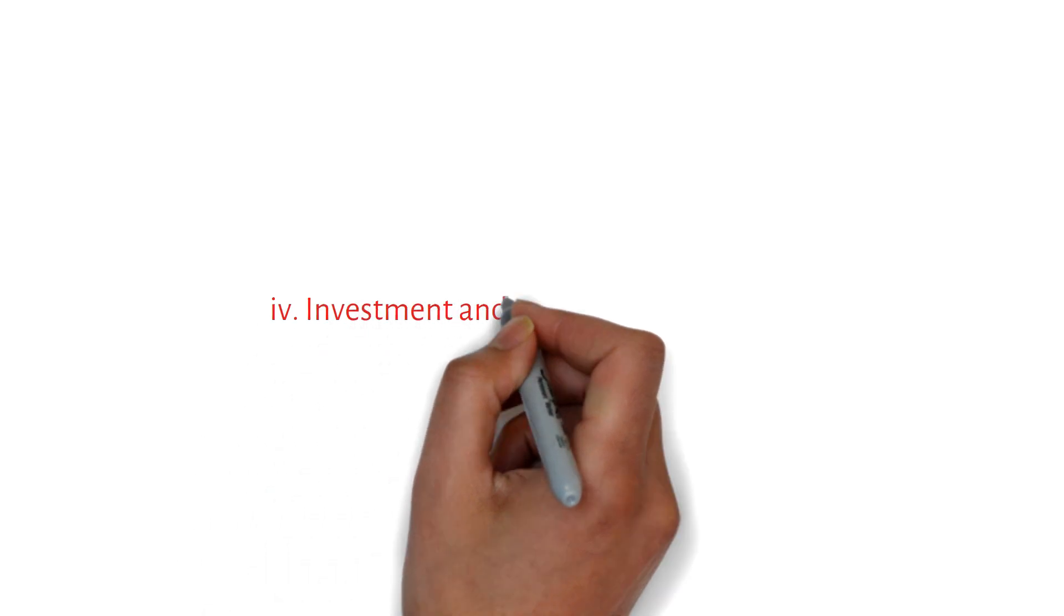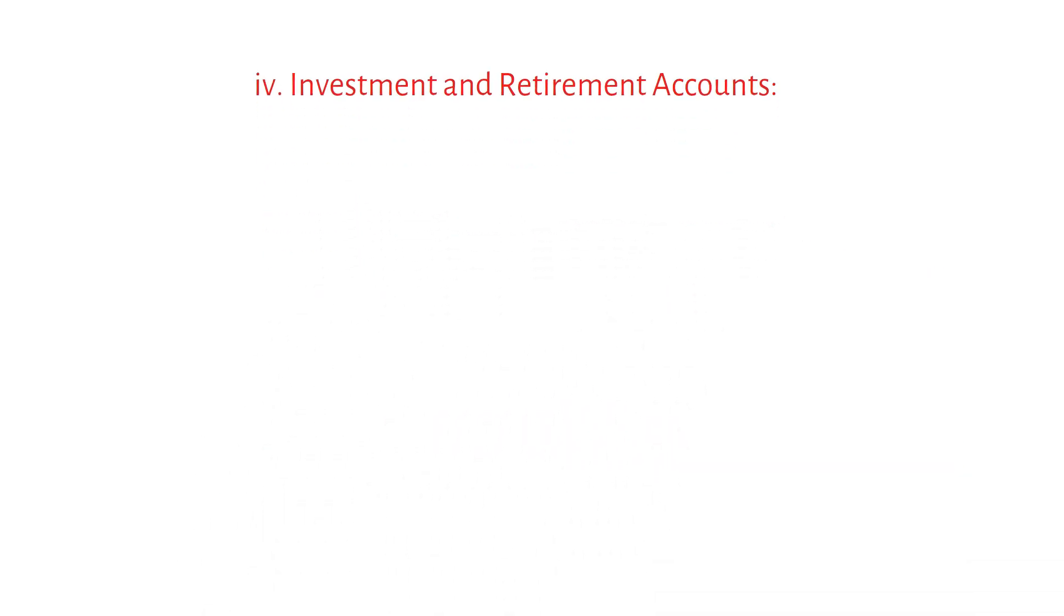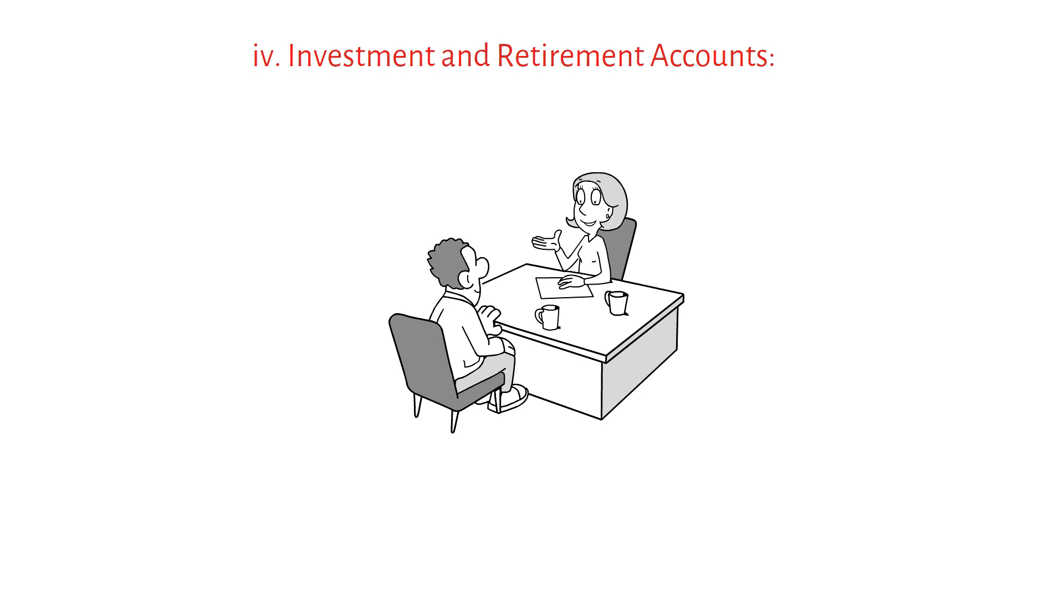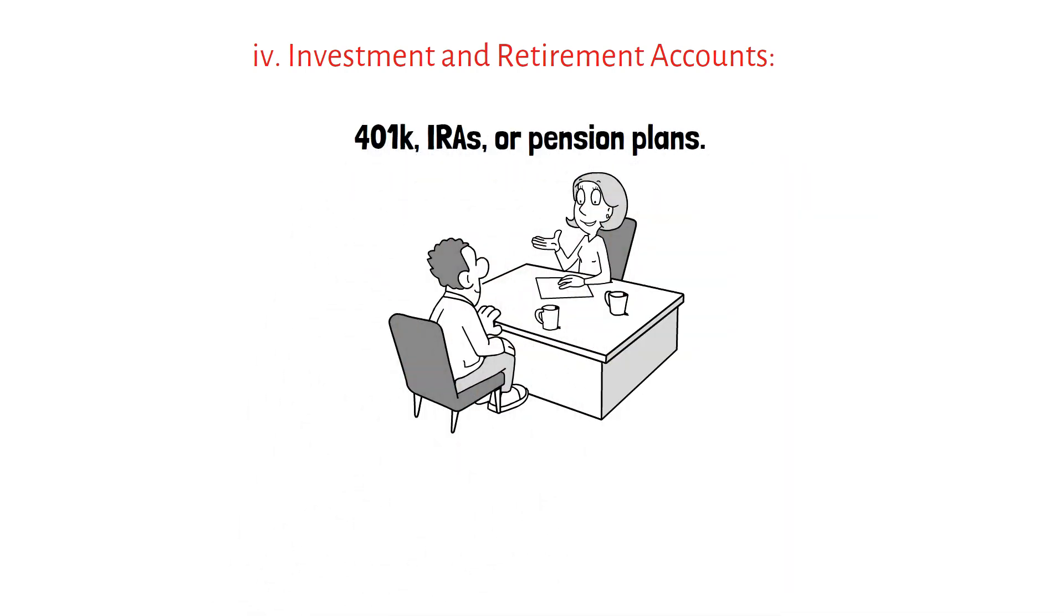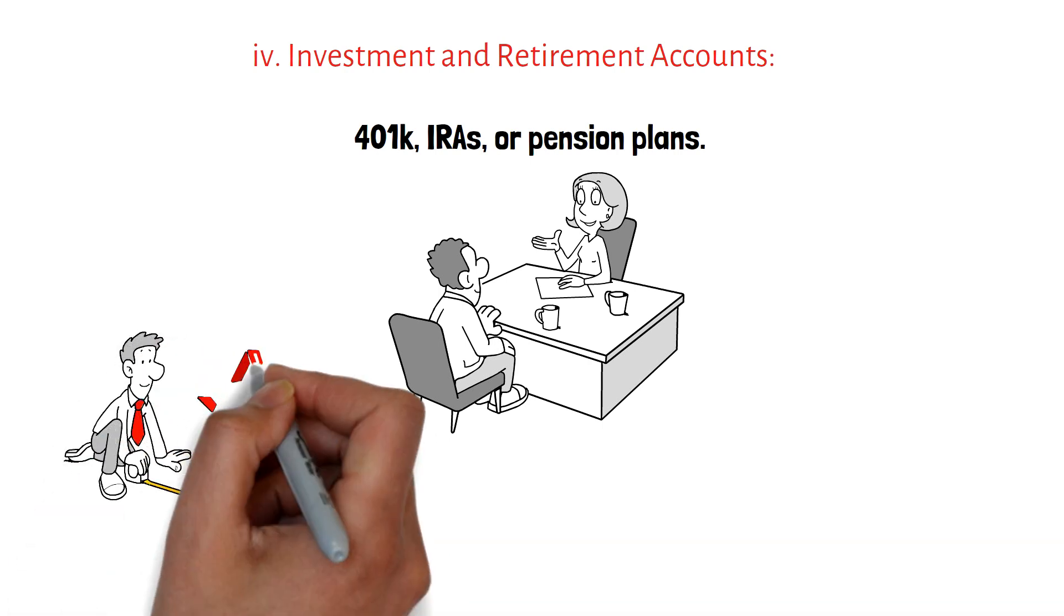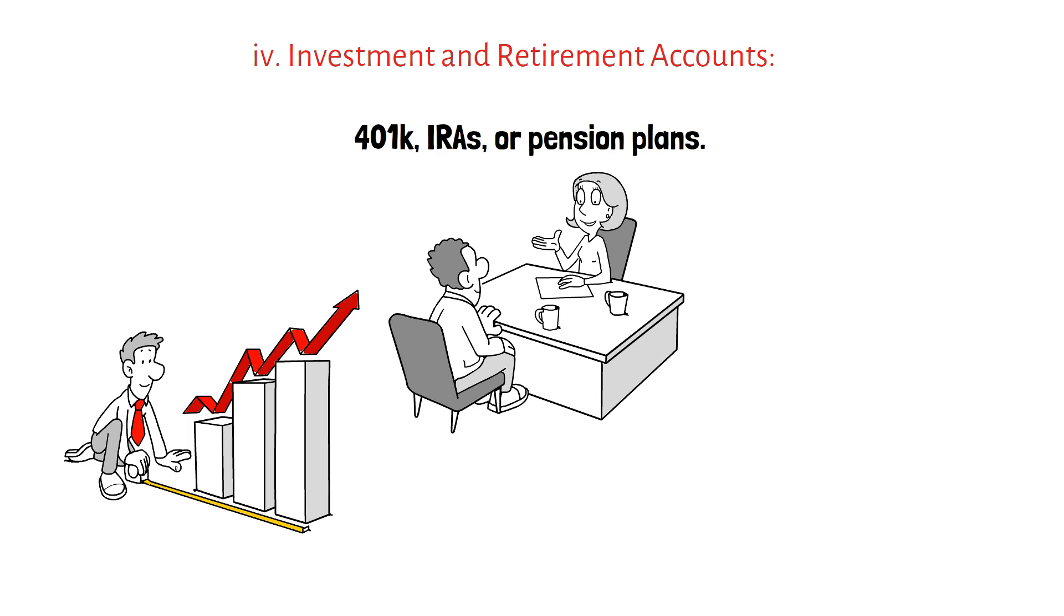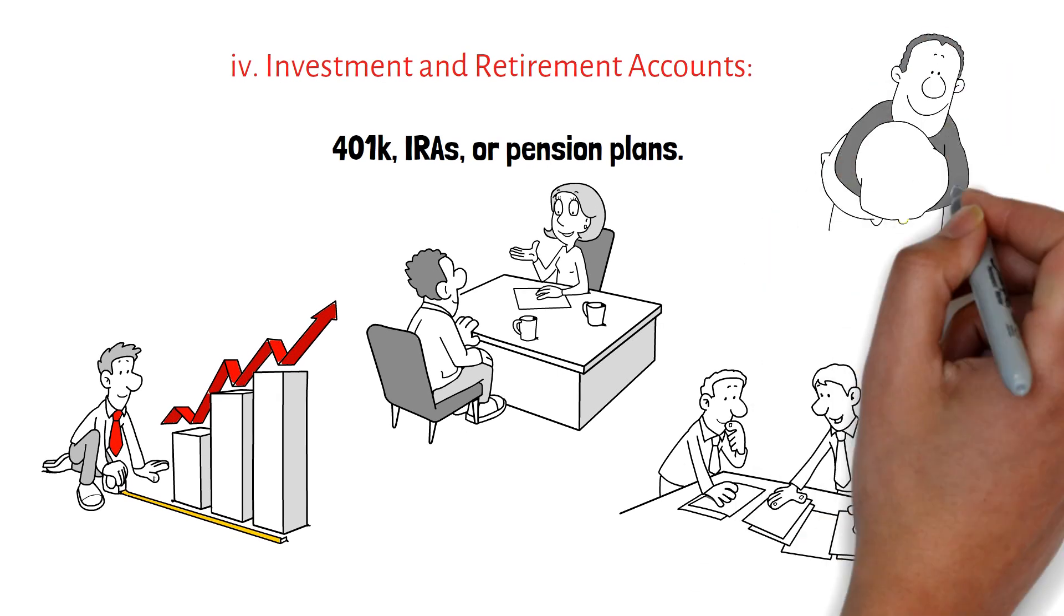Investment and retirement accounts. Review your investment portfolio, including retirement accounts such as 401k, IRAs, or pension plans. Assess the performance of your investments and consider whether they align with your risk tolerance and long-term goals. Evaluate the diversification of your investments and make adjustments as needed to ensure a balanced and suitable asset allocation.